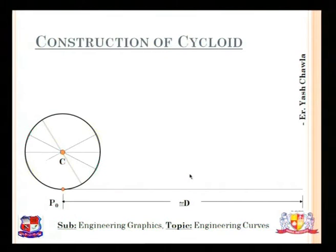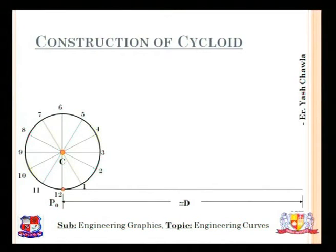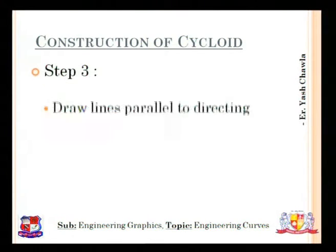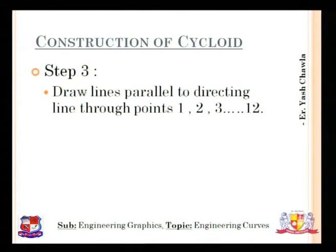Step 2: Divide the circle into 12 parts and name them 1 through 12. The more divisions you make on the circle, the more accurate your curve will be. 12 is the standard number of divisions to use.